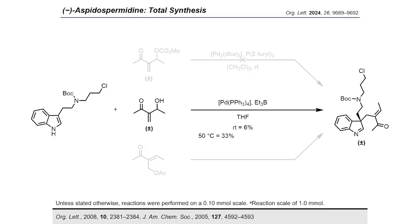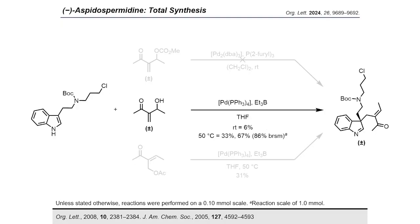We then submitted the allylic acetate under the same reaction conditions and the indolinine product was obtained in a comparable yield of 31%. From these studies, the allylic alcohol was selected as the allylic alkylation substrate best suited for our strategy, due to its delivery of the indolinine in the highest yield and its preparation in a single high-yielding reaction. Upon performing the reaction at larger scale, the indolinine product was obtained in a preparatively useful yield of 67%.